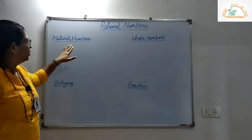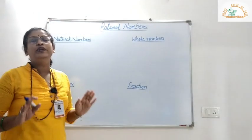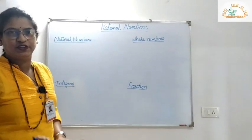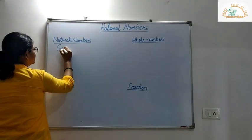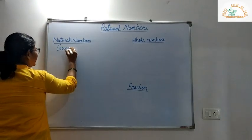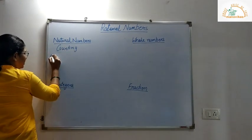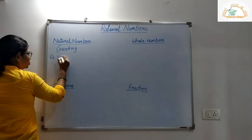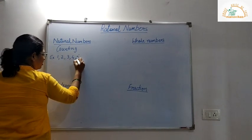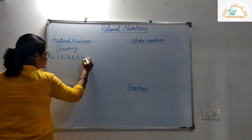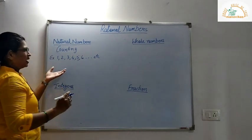Now moving on to natural numbers. All counting numbers are called as natural numbers. For example, 1, 2, 3, 4, 5, 6, etc. are called as natural numbers.